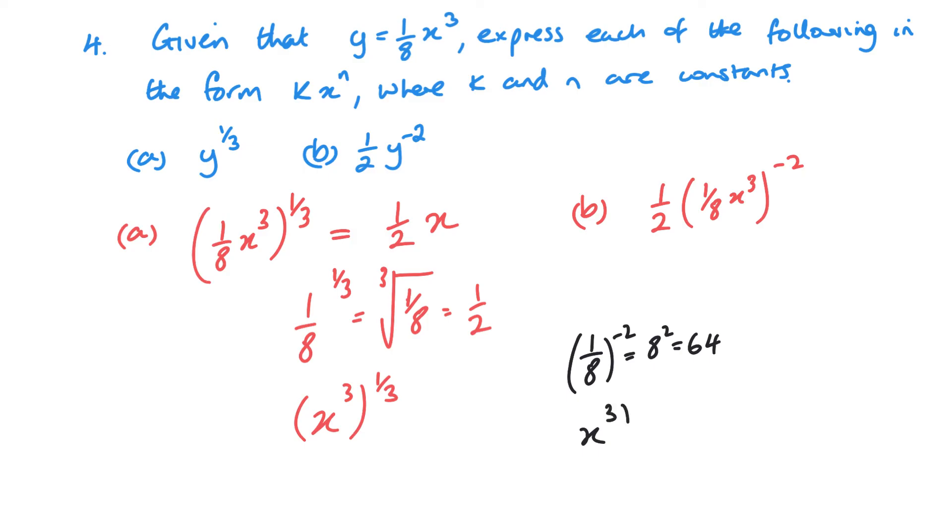My 1 eighth to the minus 2 is going to be the same as 8 squared, 64. My x to the 3 to the minus 2, I can just multiply them, x to the minus 6. And then replacing that back in here, I'm going to have a half times 64 times x to the negative 6. Half of 64 is 32. And I can put my x to the power of 6 on the bottom there instead.